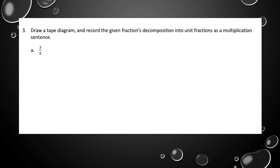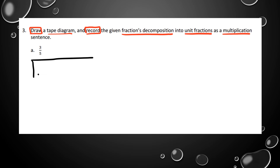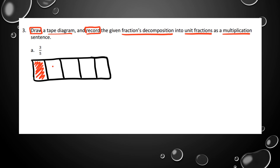Let's do one more. The directions say: draw a tape diagram and record the given fraction's decomposition into unit fractions as a multiplication sentence. The fraction is three-fifths. The denominator is fifths, so I need five equal parts, and then three boxes shaded in because that's the numerator.